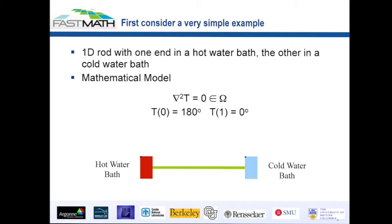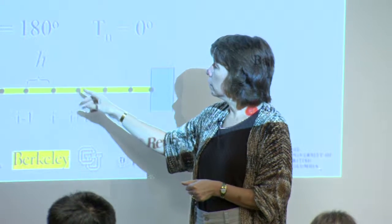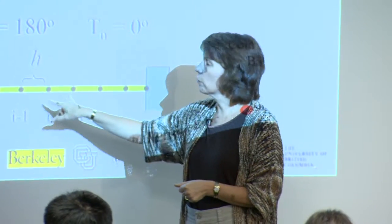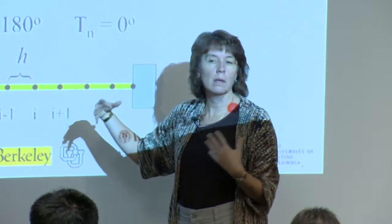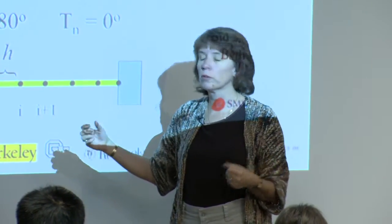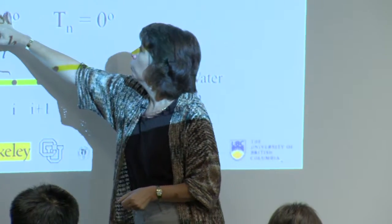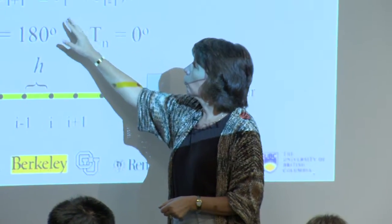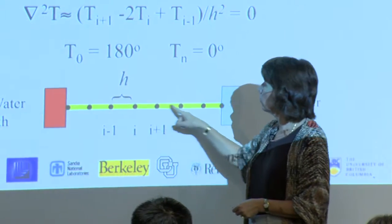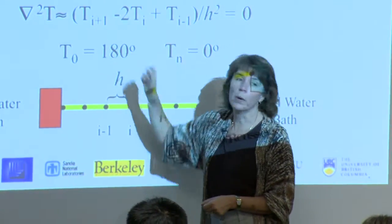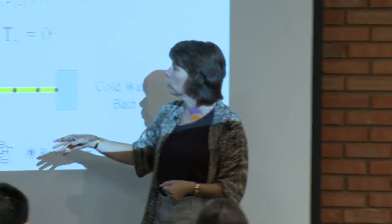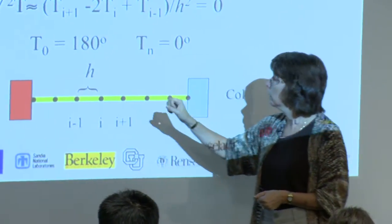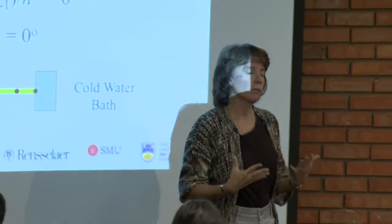Every grid point is going to be the average of the two grid points around it — that's a centered finite difference approximation of the Laplacian. Now instead of having a continuous variable T, I have discrete points T sub i, T sub i plus one, et cetera. I still have boundary conditions: at T zero I have 180 degrees, and at the very last point T sub N I have zero degrees.